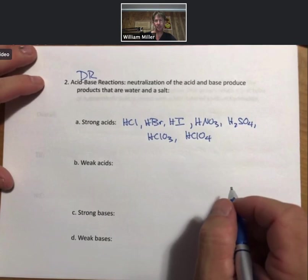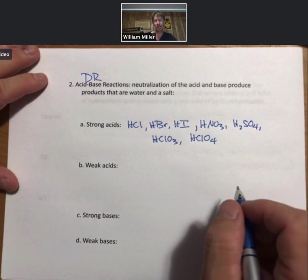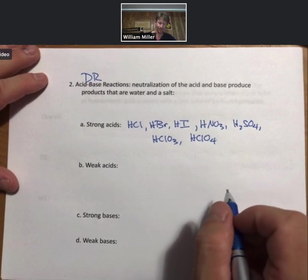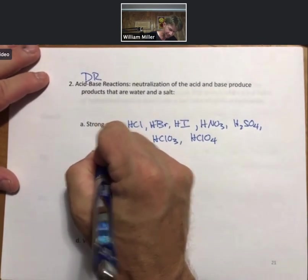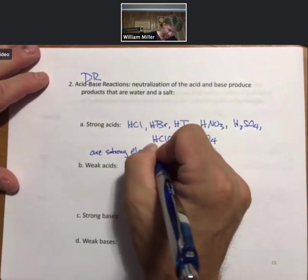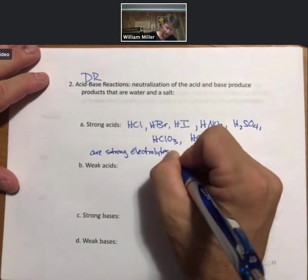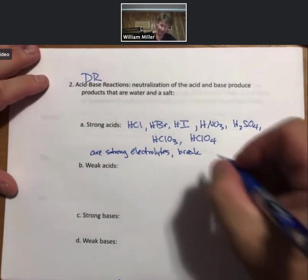There are thousands of weak acids. There are only seven strong acids. So memorize them. Strong acids are strong electrolytes. And they break up 100% into ions.